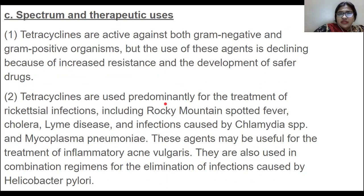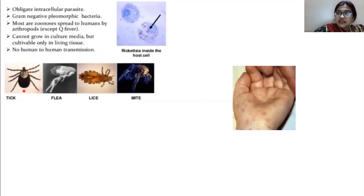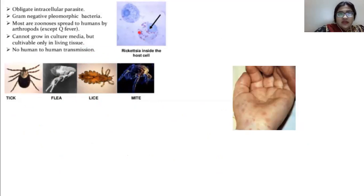Tetracyclines are active against both gram-negative and gram-positive organisms, but use of these agents is declining because of increased resistance and development of safer drugs. Tetracyclines are used predominantly for the treatment of rickettsial infections. Rickettsial infections are caused by ticks, fleas, lice, and mites. Rickettsia is an obligate intracellular parasite, a gram-negative pleomorphic bacteria. An example is Rocky Mountain spotted fever, which presents with high fever and blotchy rashes on the body.